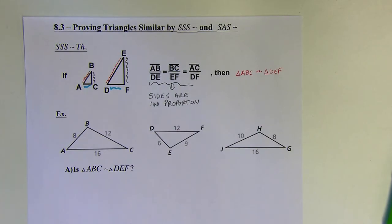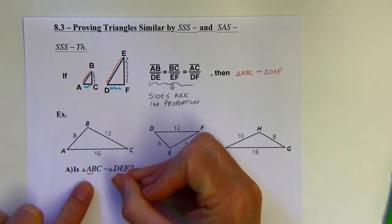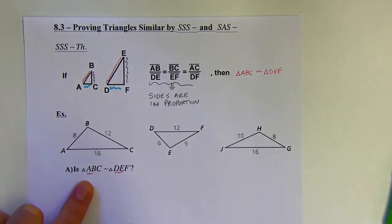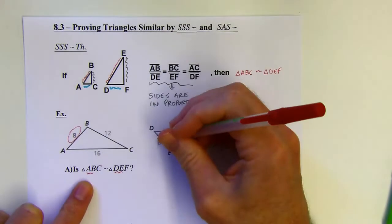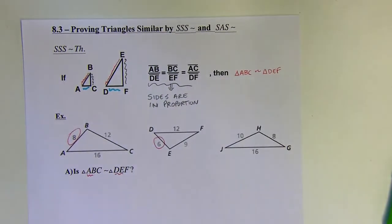So on this example, first it says, is triangle ABC similar to triangle DEF? What I want to do is see if the sides are in proportion. So AB, I can see those are the first two letters that should match up with DE. Also, I can see AB is the smallest of these, and DE is the smallest. So I know that those two should match up.